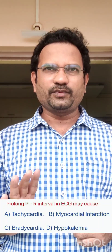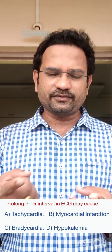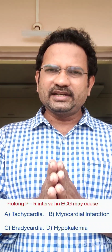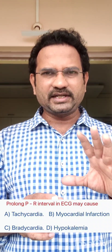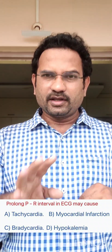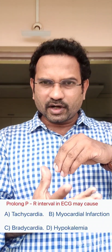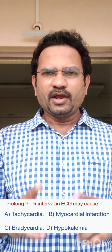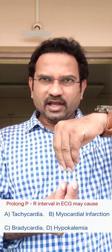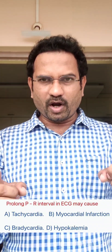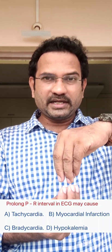The options are: tachycardia, myocardial infarction, bradycardia, or hypokalemia. In ECG we have P wave, QRS wave, and T wave. P wave indicates atrial depolarization, that means atrial contraction. QRS wave indicates ventricular depolarization, that means ventricular contraction. T wave indicates ventricular repolarization or relaxation. PR interval indicates the duration between atrial contraction and ventricular contraction. If PR interval is prolonged, that means the time gap between these two is increased, so heart rate per minute is reduced.